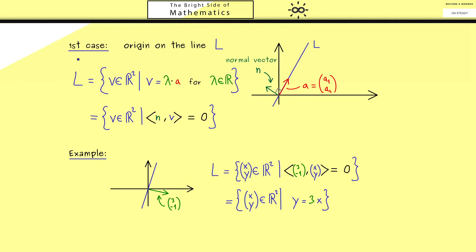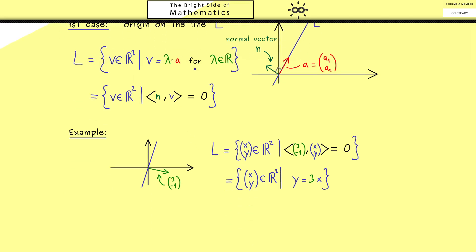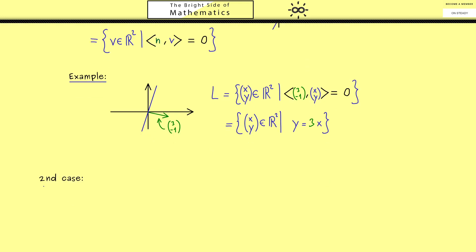This is the general case where the line does not have to go through the origin. Also there we should start with a visualization. So here we have the plane again and maybe one line here.